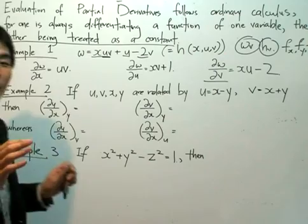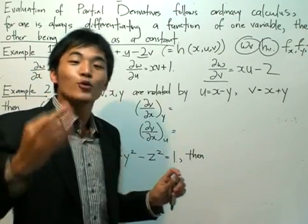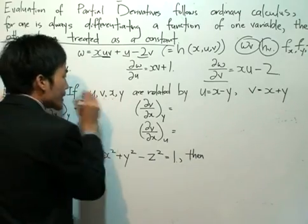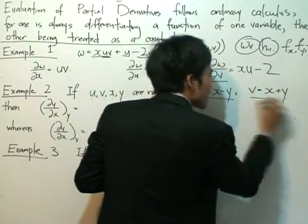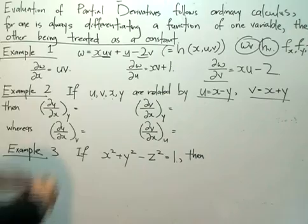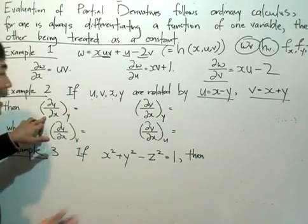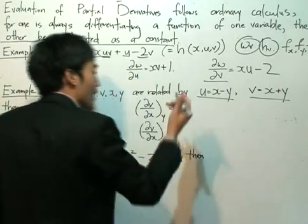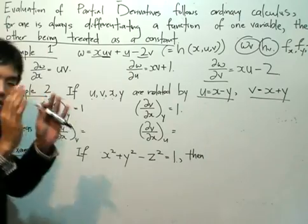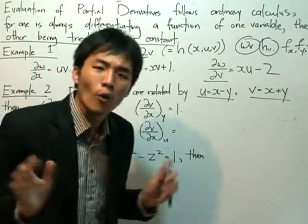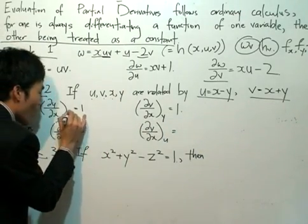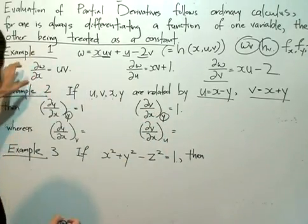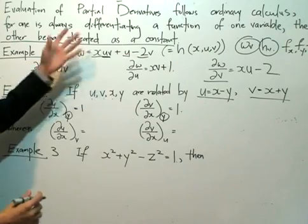Moving on to example two. We need to take extra care when dealing with more than three variables. This time I have four variables: u, v, x, and y, related by two equations: u equals x minus y, and v equals x plus y. As before, when I partially differentiate u with respect to x, I get one — y is treated as a constant and drops to zero. Partially differentiating v with respect to x also gives one. What you see here is an explicit notation telling the reader which variable is held constant. In this case, we're holding y constant, shown by the subscript y in brackets.